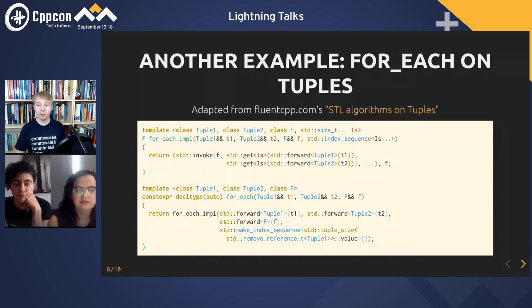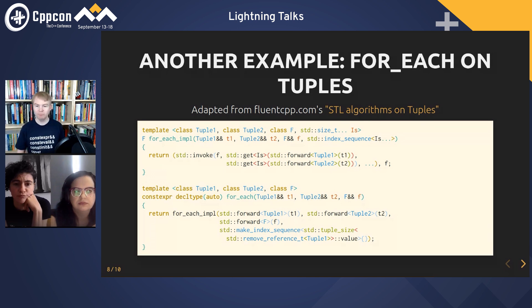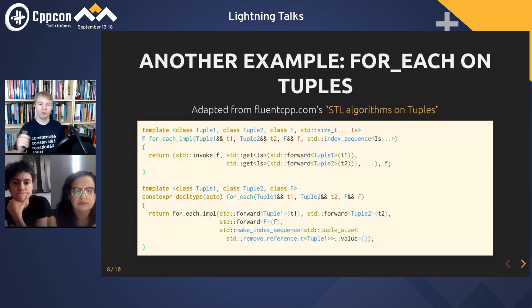Jonathan Bacara had a blog post on this called 'STL Algorithms on Tuples' on fluentcpp.com. It uses the same kind of pattern as std::apply — the bottom function is what the user calls, and all it does is forward each tuple and the function, then do the make_index_sequence. We're assuming the two tuples are the same size, with a static assert for that. You can see it's the same pattern as apply — destructuring the type just to call this ancillary helper function inside a detail namespace, and that's what actually does the work.